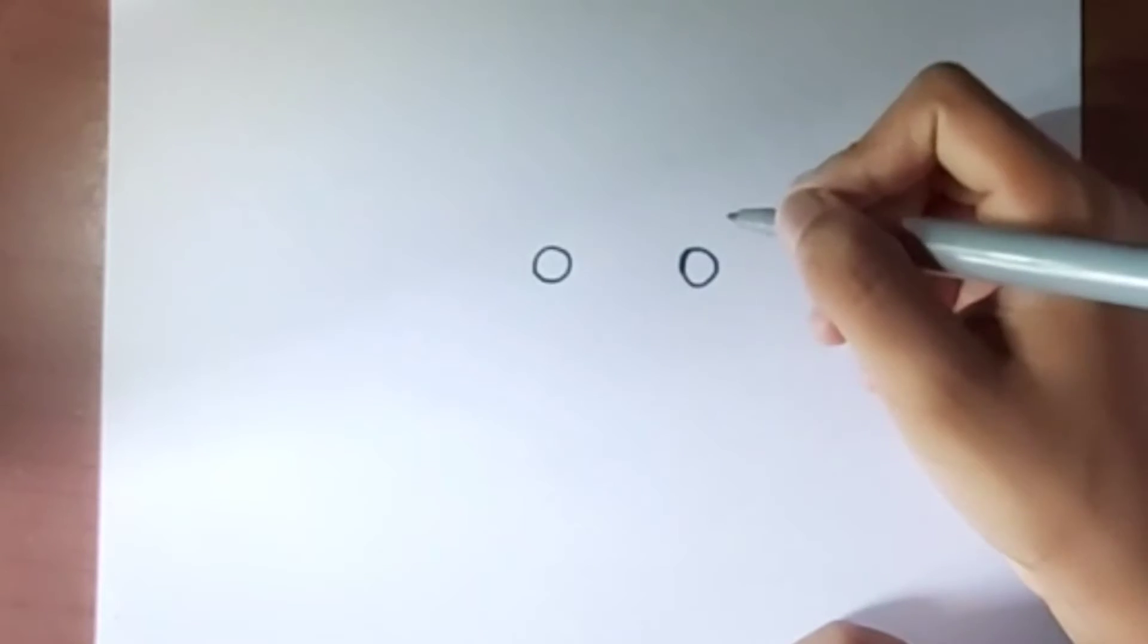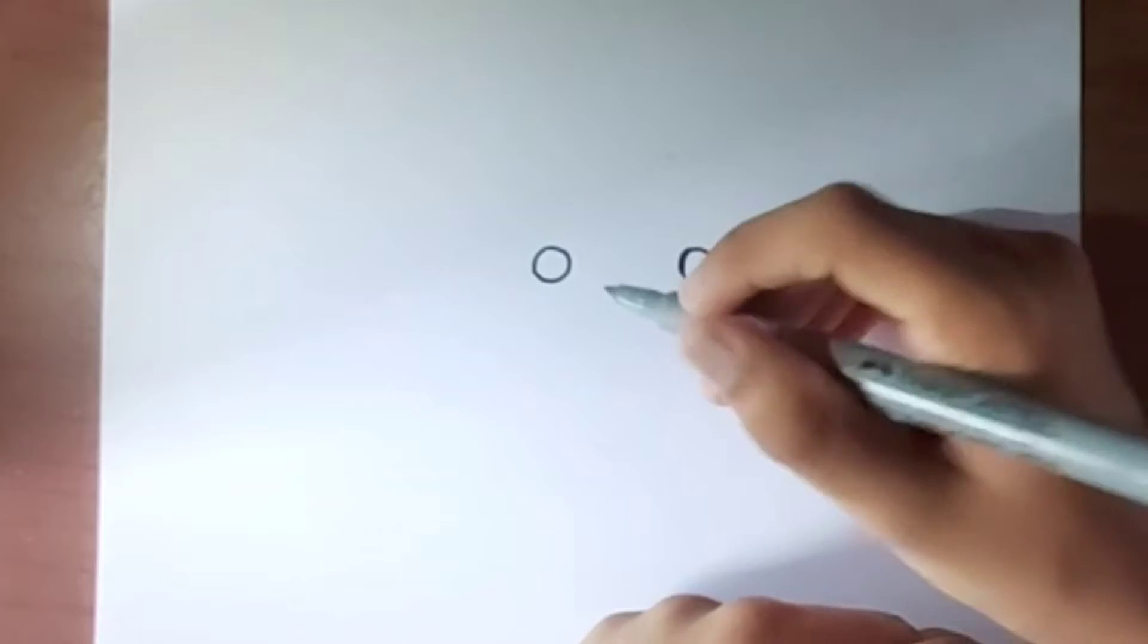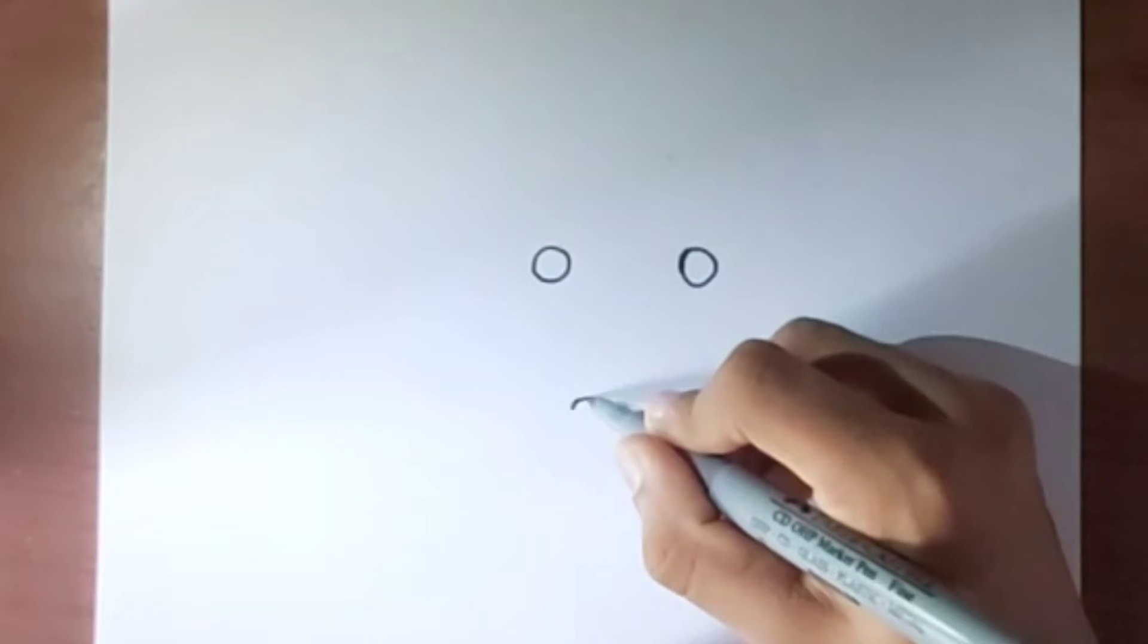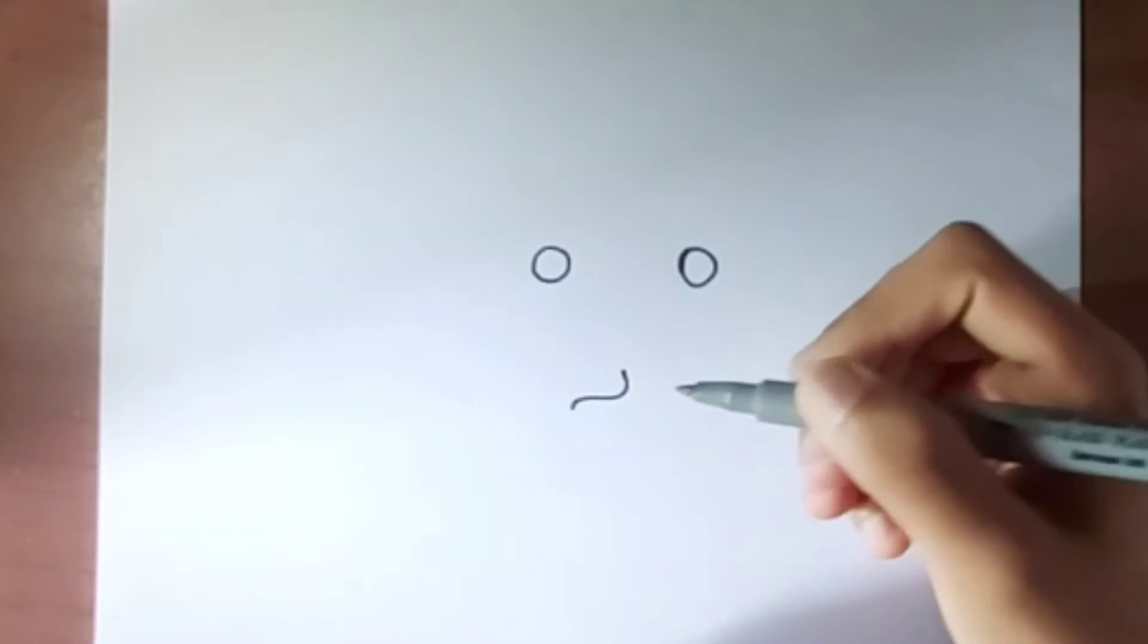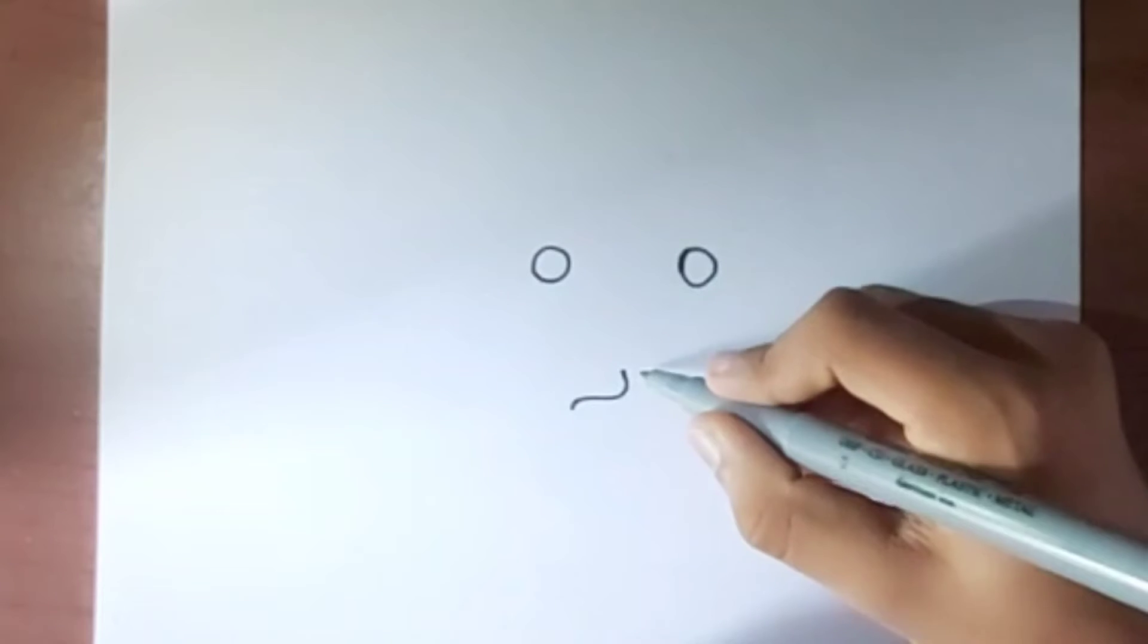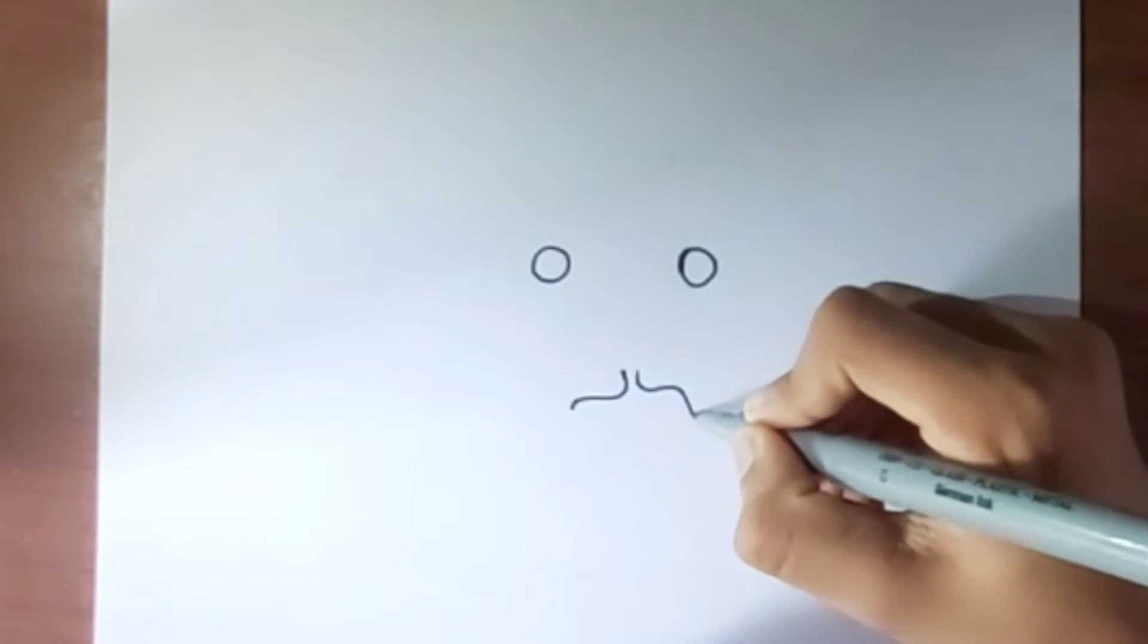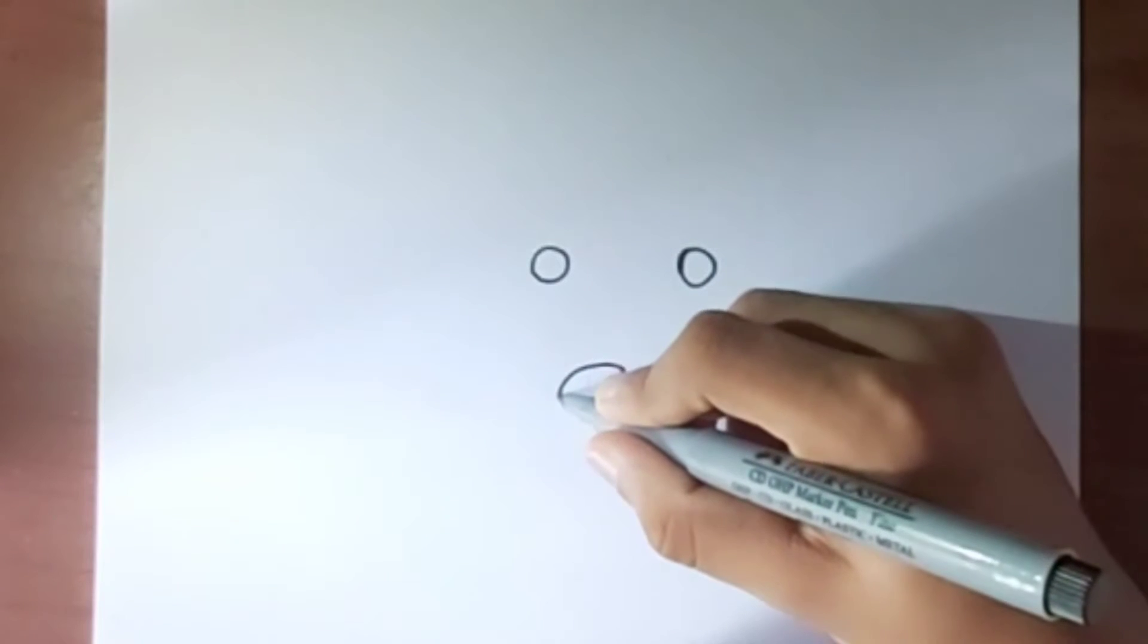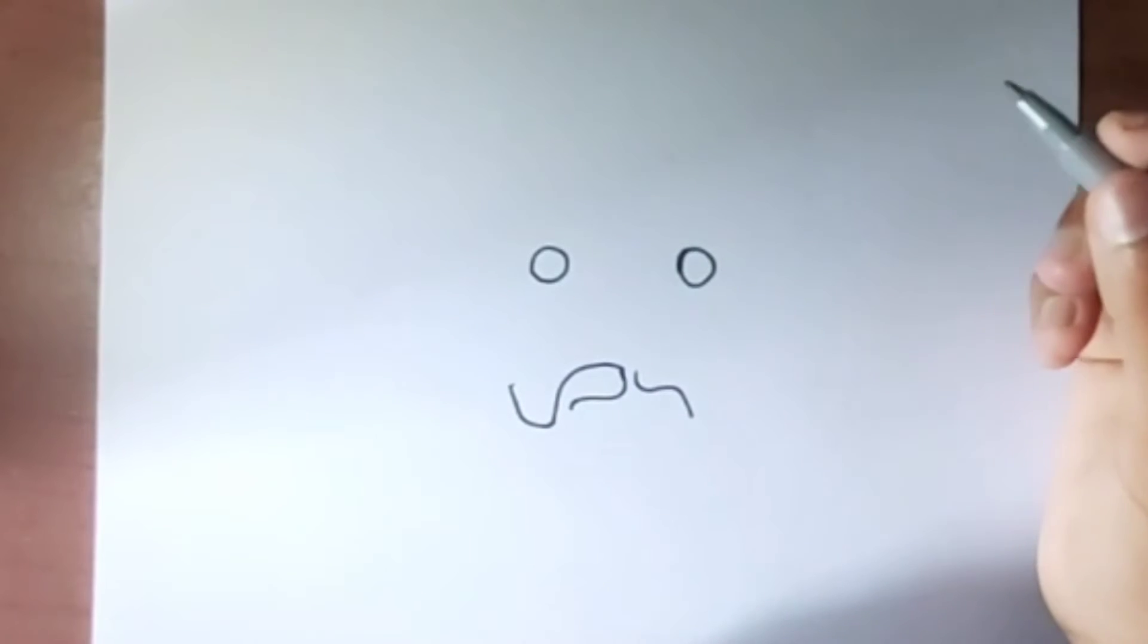Leaving a small gap in between, now we draw from here and the same on the other side. From here we take it up and then like this.